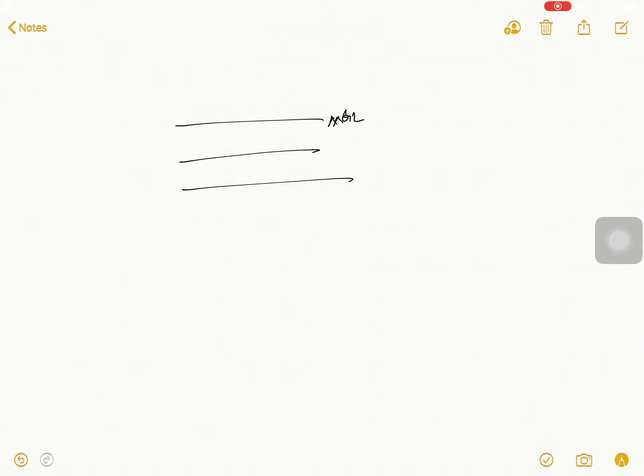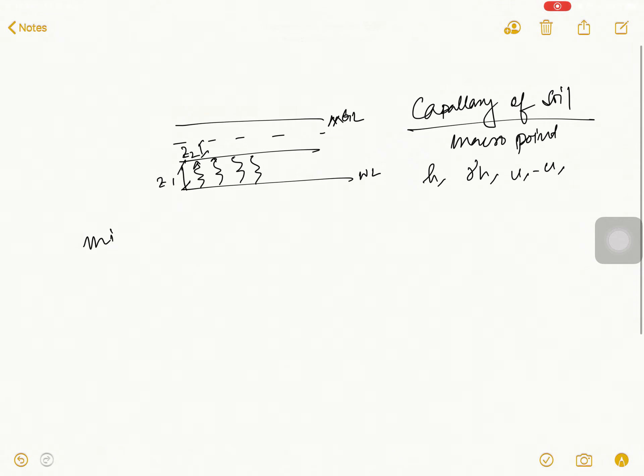This is your GL. If this is your water level, then capillary zone, zone 1, zone 2, we have drawn some diagram. Do you remember that? In my last video I talked about capillary of soil. We talked about detail, we talked about macro point of view. We talked about H, capillary pressure, gamma H, negative pore pressure, and capillary fringe.